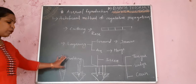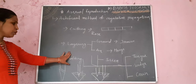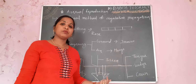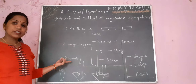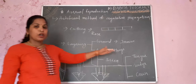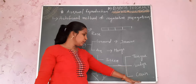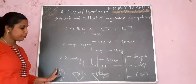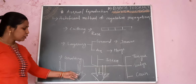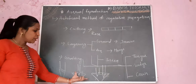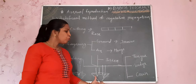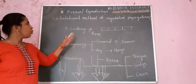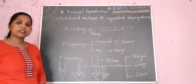Grafting is a process where two characters of two different plants are found in one single plant. Grafting is of three types: tongue grafting, wedge grafting, and crown grafting. In tongue grafting, both the diameter of stock and scion are more or less the same. In wedge grafting, the scion diameter is less than the stock. In crown grafting, two or three scions are used. These are all about the artificial method of vegetative propagation.